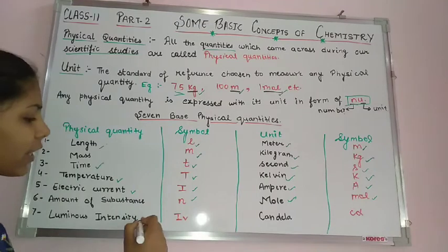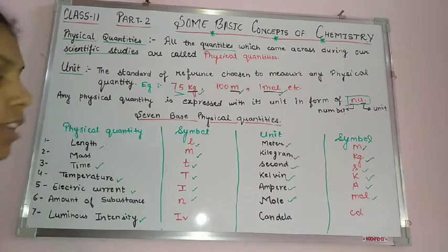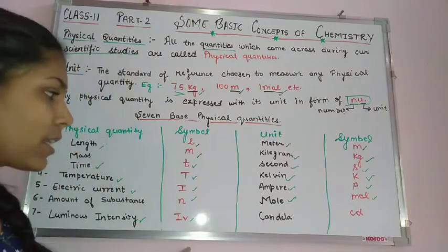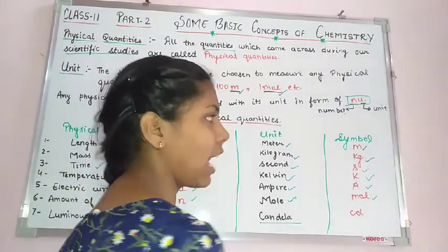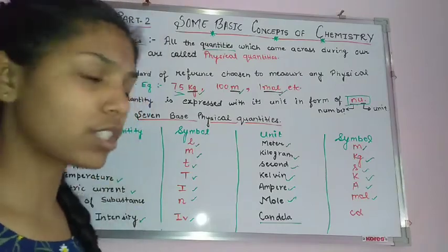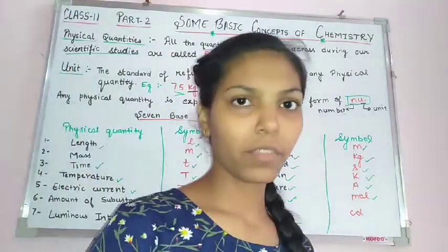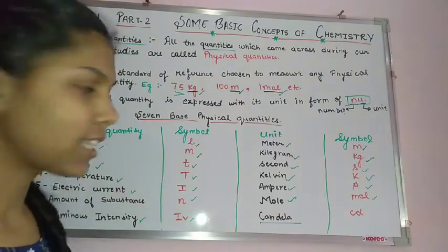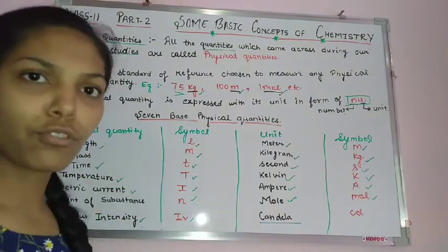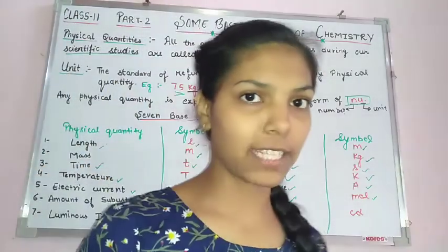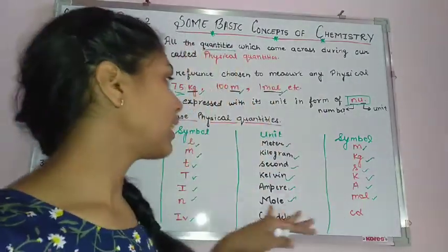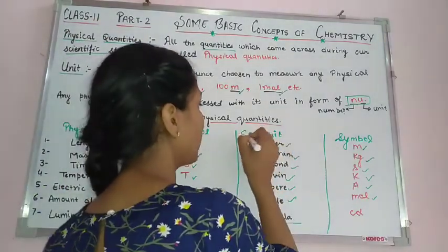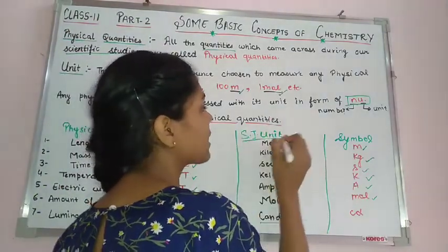The last physical quantity is luminous intensity. We represent luminous intensity with capital I subscript v. Its SI unit is candela and its symbol is cd. These are our seven base physical quantities. All these units together form the SI units — the International System of Measurement.